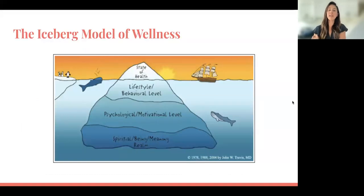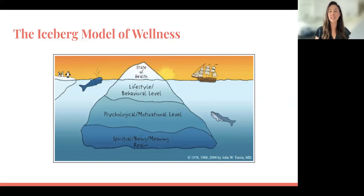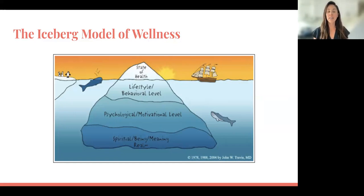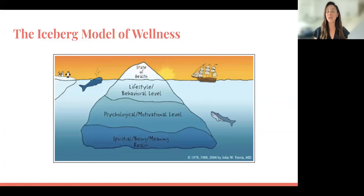The iceberg model of wellness is another one that helps us understand what wellness and health really are. Above the water, at the tip of the iceberg, you see the state of health — what's visible to the naked eye or maybe on a blood test. You might assume someone's physical health based on their body composition, their pallor, or their blood test levels. But we can't see what's beneath the surface just by looking at someone. We can't determine whether someone is healthy or well just by looking at them. There's a lot that goes on underneath that contributes to the overall state of well-being.